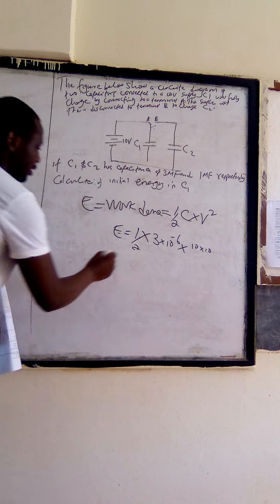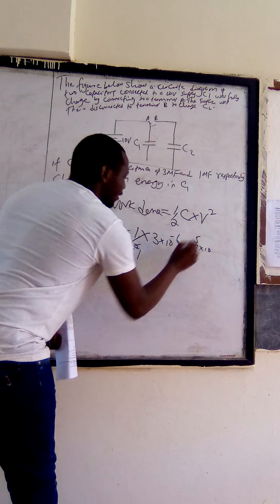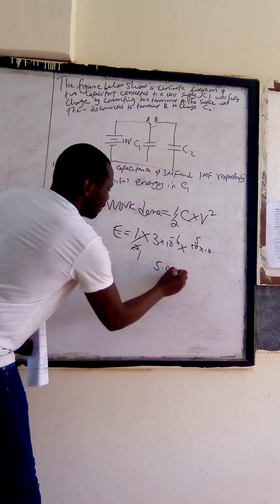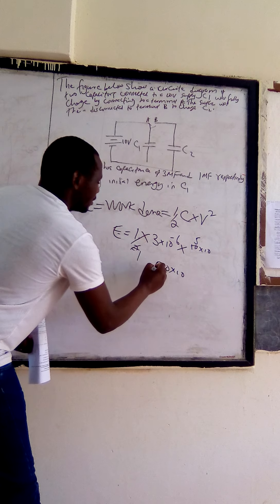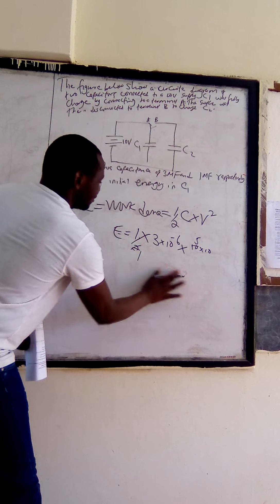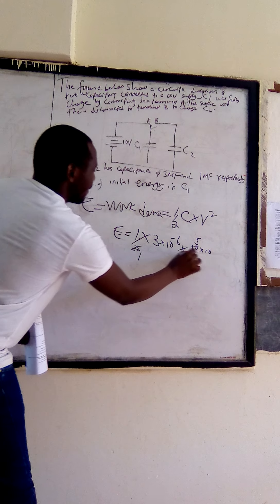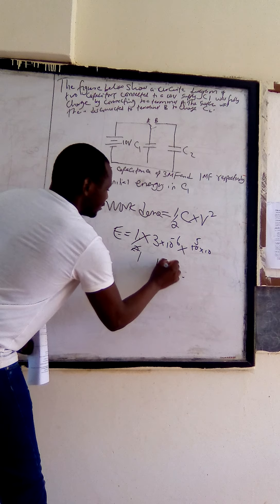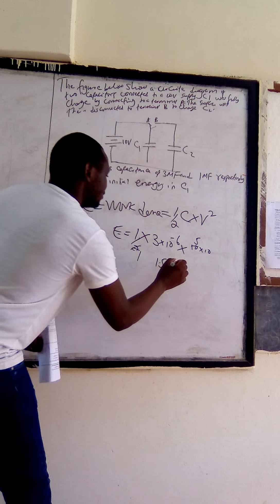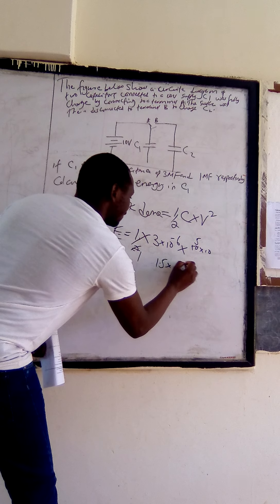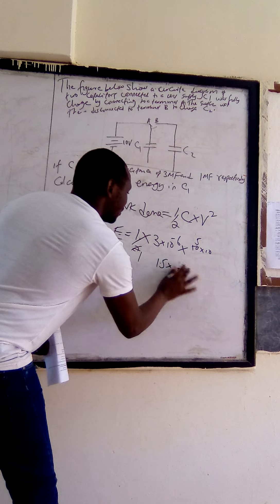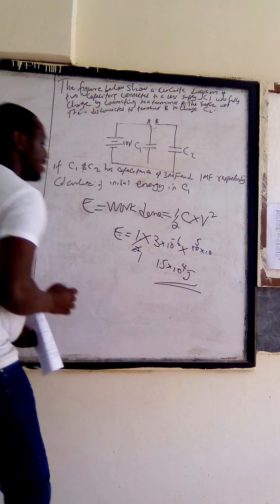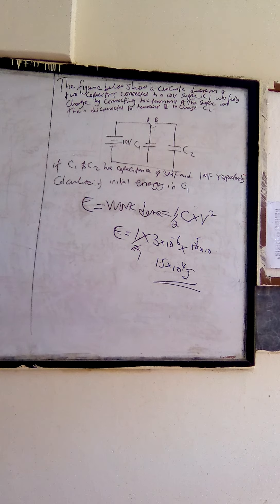So 1 by 2 is 0.5. We end up having 5.0 times 10. Now it is supposed to be 15 multiplied by 100, that is 150, so 1.5 times 10 to power negative 4. So that is for part A.